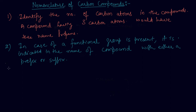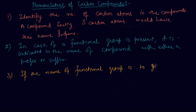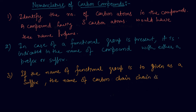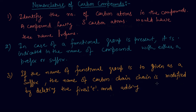I am telling you the steps first, then we will see some examples. The third step is: if the name of the functional group is to be given as a suffix, the name of the carbon chain is modified by deleting the final 'e' and adding the appropriate suffix.